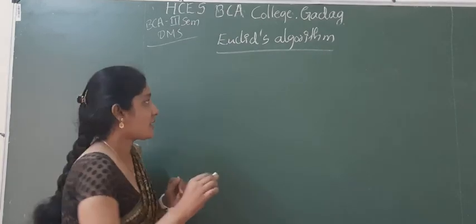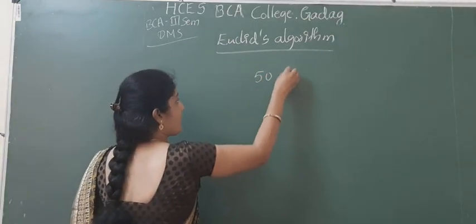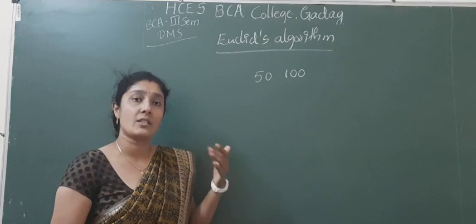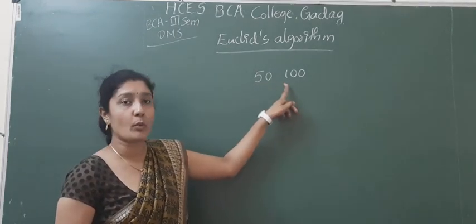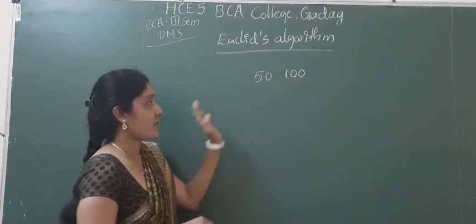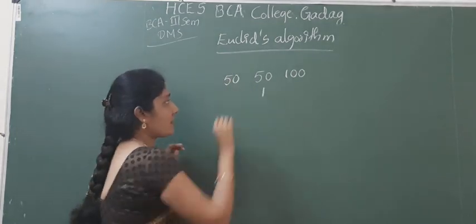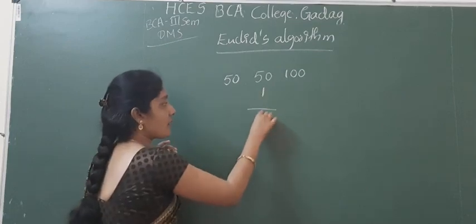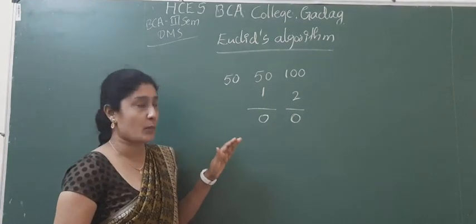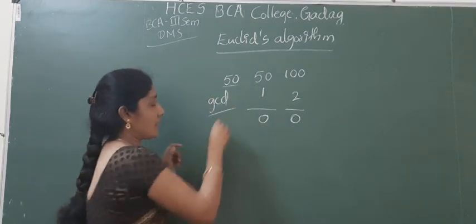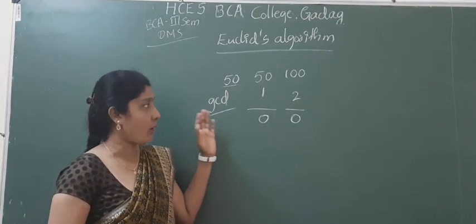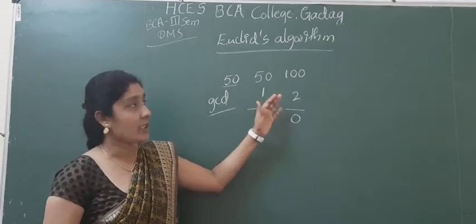So, Euclidean algorithm means: when there are two integers, take for example 50 and 100, you have to find out the largest number which divides the given two integers with the remainder as 0. Which number divides this? 50 — one 50 is 50, so the remainder will be 0. Two 50s are 100, so the remainder will be 0.